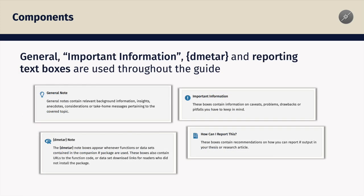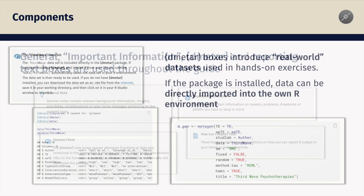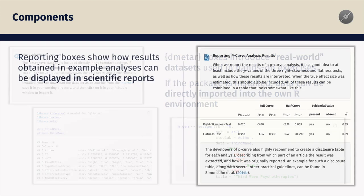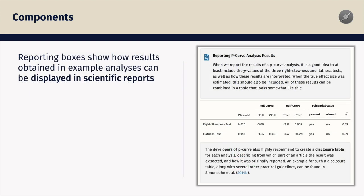There are a few components which appear regularly throughout the guide — for example, text boxes displaying general notes, important information, information on the Dimeta package, and ways to report results of various meta-analytic methods. The Dimeta boxes appear every time a new dataset is introduced in hands-on exercises. If Dimeta is installed on your computer, you can directly import the example dataset into your own R environment and start coding along. Reporting boxes, on the other hand, show how results of an example analysis can be displayed in scientific reports.